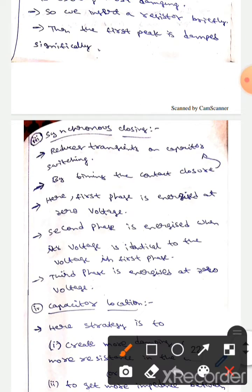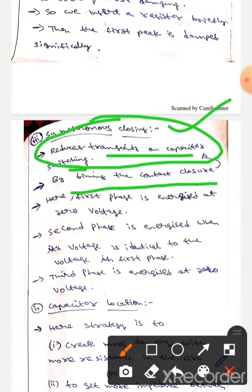The next one is synchronous closing. Here it reduces transients on capacitor switching. By timing the contacts closer, we can reduce the transients of capacitor switching.